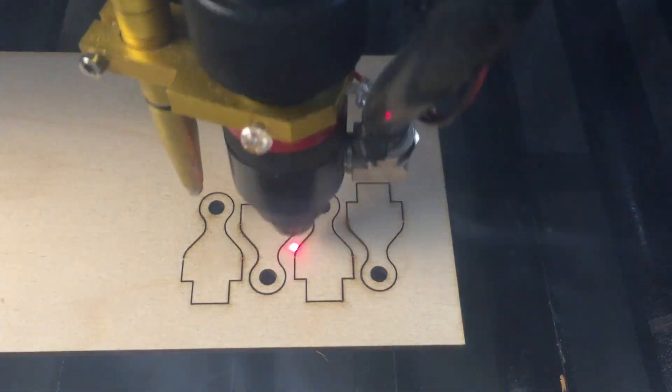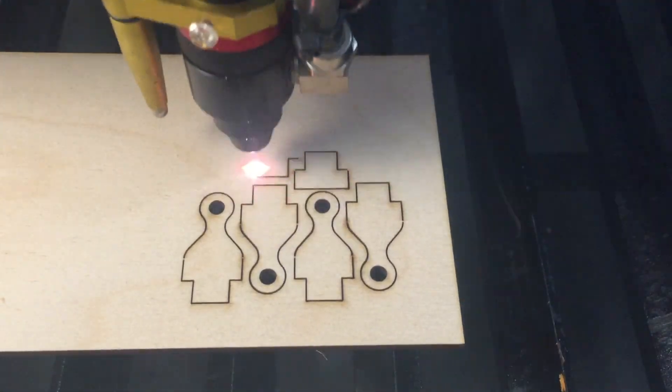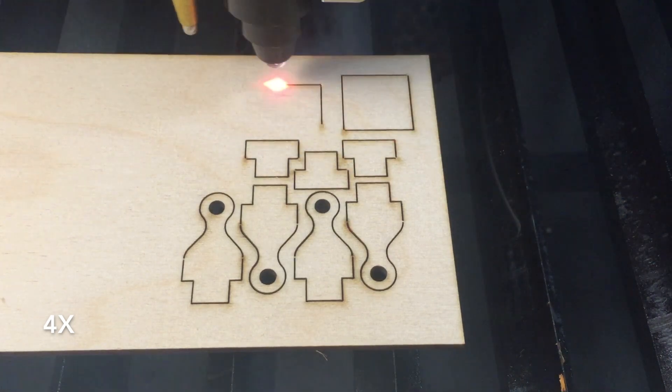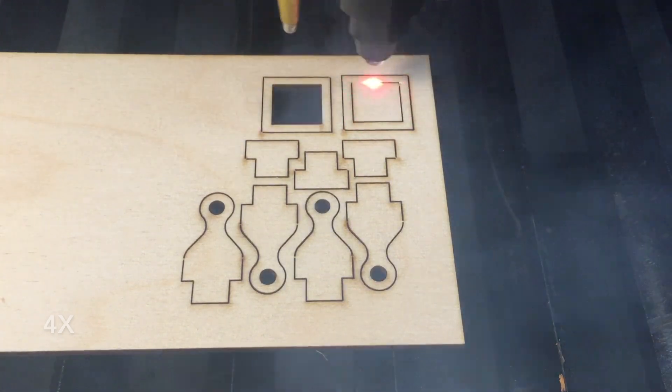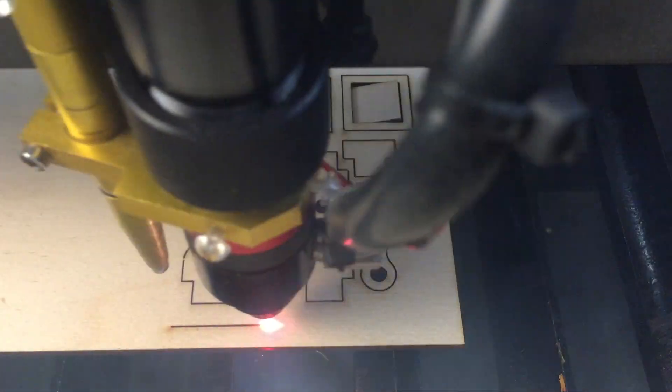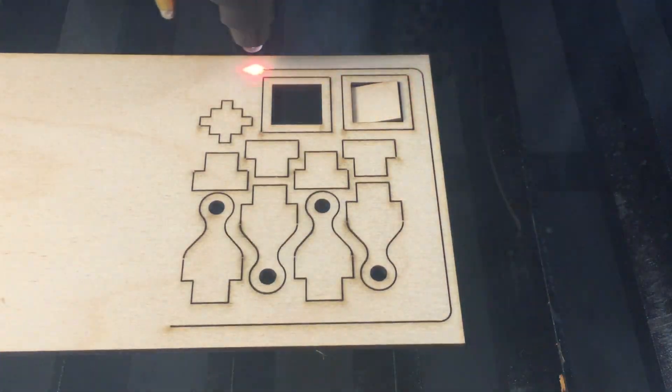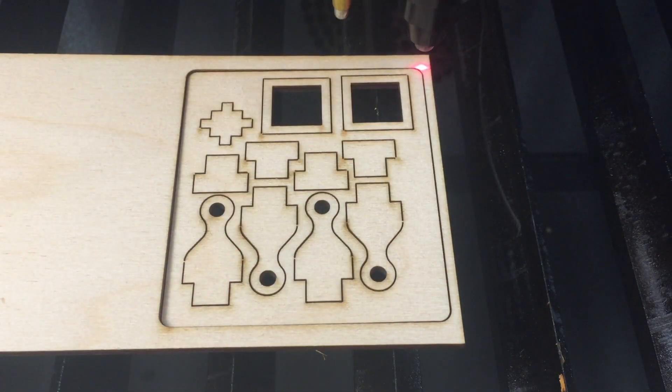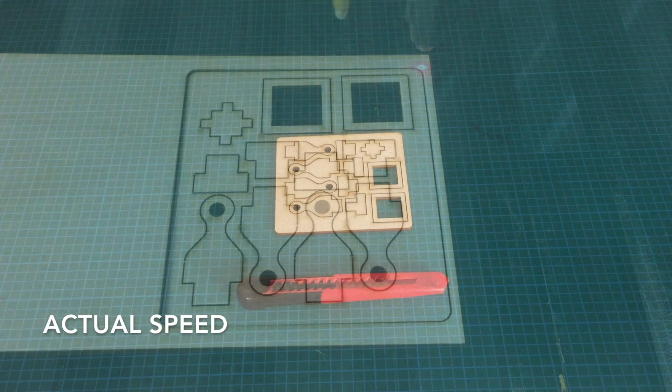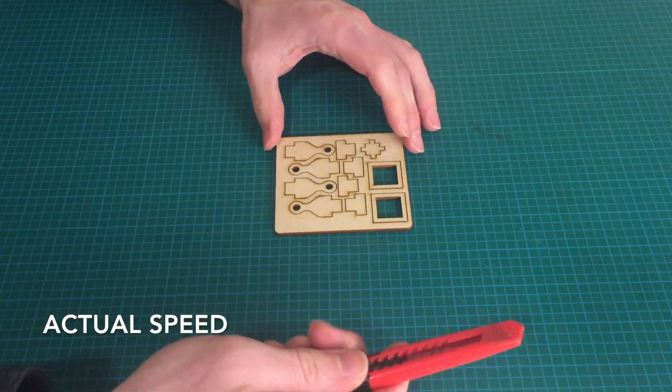One of the reasons I'm so keen to learn Fusion is that it allows me to design using parameters. The biggest problem I have when designing is that I need to know the thickness of the material in order to make the joints fit accurately. If I don't have the material when I start designing, this means guessing or having poorly fitting joints or modifying the design once I have the material.